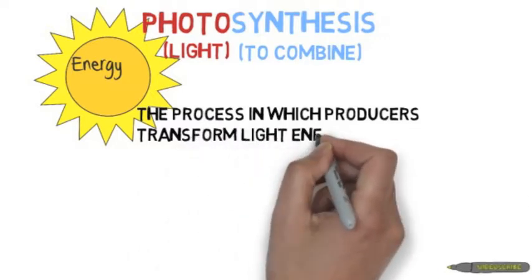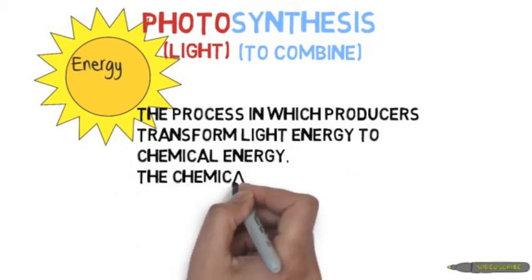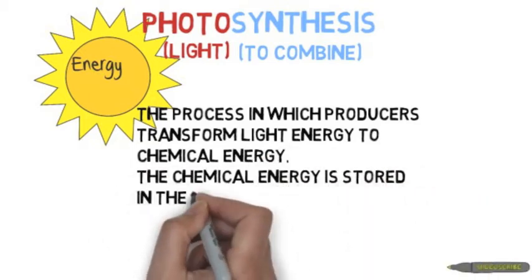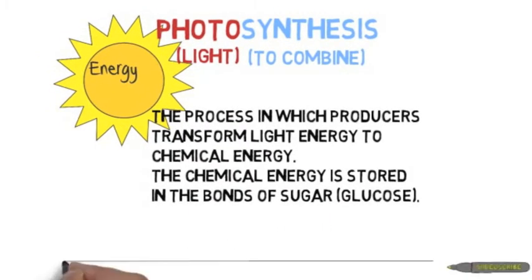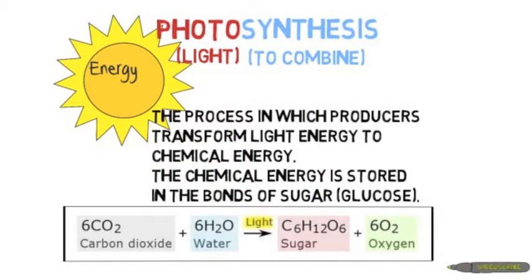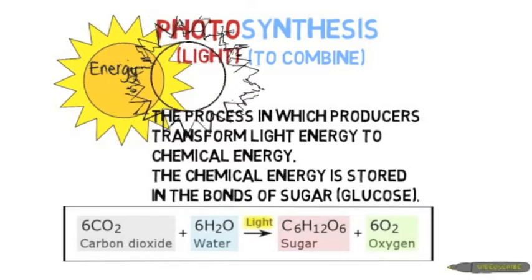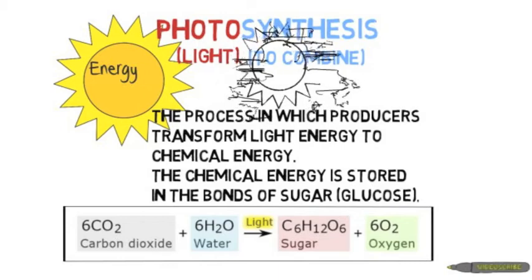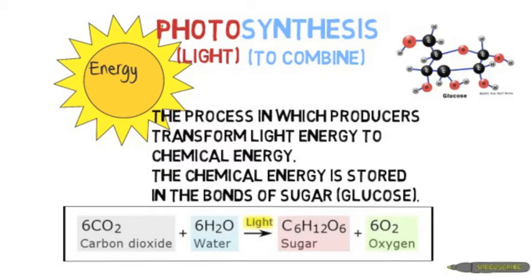Photosynthesis is a very important reaction. It is the process in which producers transform light energy to chemical energy. The chemical energy is stored in the bonds of sugar or glucose. Photosynthesis can also be represented in a chemical equation: carbon dioxide plus water yields sugar plus oxygen. The arrow has light over it — this is the energy that fuels this reaction.